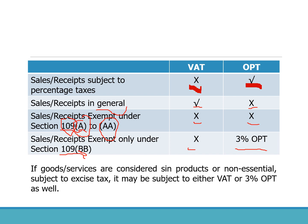Take note that while VAT and percentage taxes are mutually exclusive, excise tax is not — there is no exemption from excise tax just because VAT or OPT is already applicable. In fact, excise tax applicable on excisable articles, products, or non-essential services will actually form part of the taxable base in computing the VAT or the applicable percentage tax.